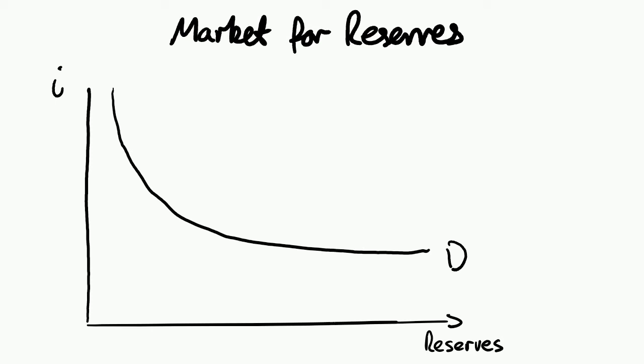At the same time, the central bank can set the supply of reserves because it has in theory an unlimited printing capacity. It can at any time credit banks with as much reserves as it wants to, because it has control of the money supply. As a result, we say that supply is perfectly inelastic — like so. The central bank in effect sets supply, and it's in this way, by setting the supply, that the central bank can set the interest rate in the interbank market.